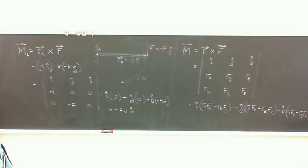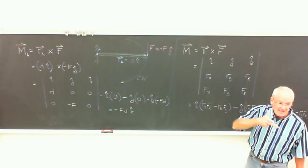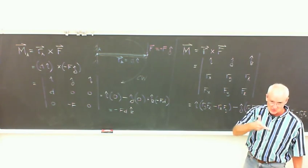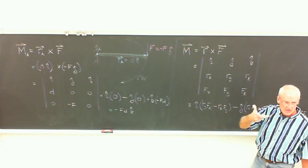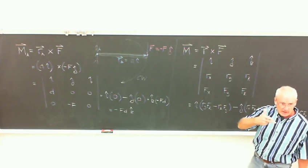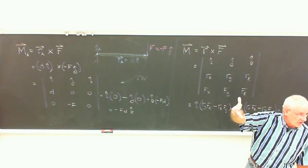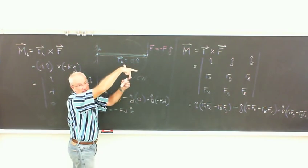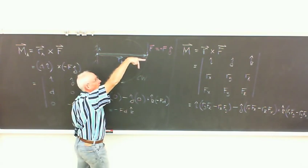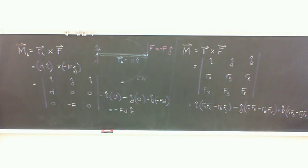Another way to apply the right-hand rule: point your first finger along the first vector r (to the right), and your second finger along the second vector F (downward). That puts your thumb into the board. There's no other way to orient your hand. For r cross F, your thumb goes into the board, giving minus k. We'll do some more of these and move on to three-dimensional problems coming up.